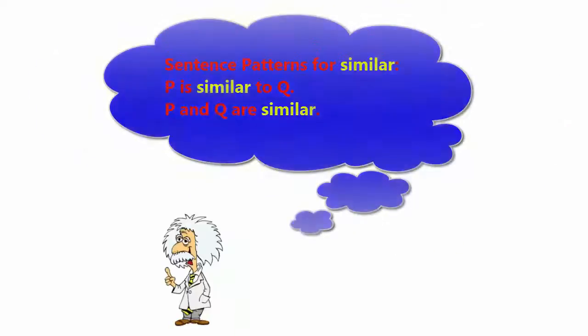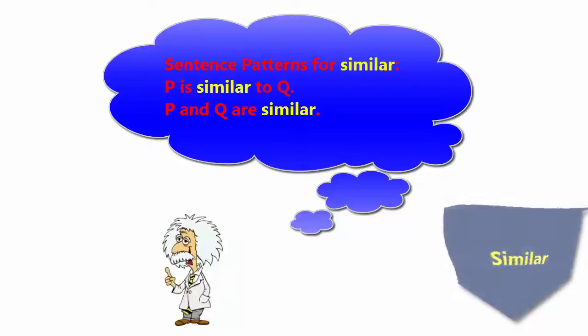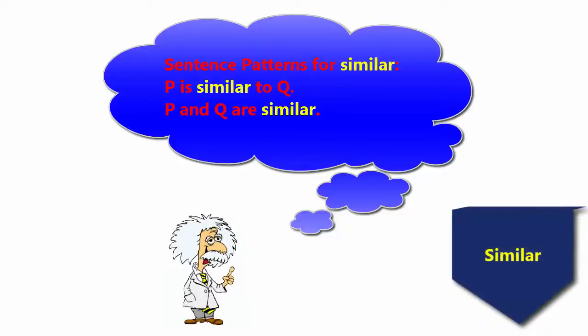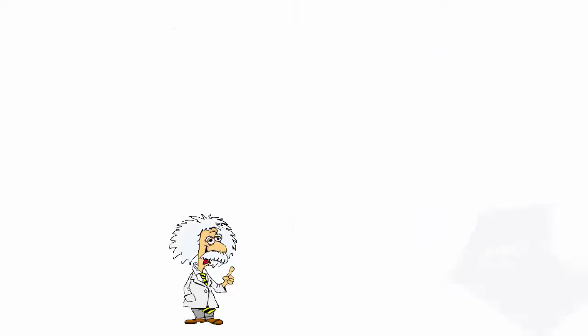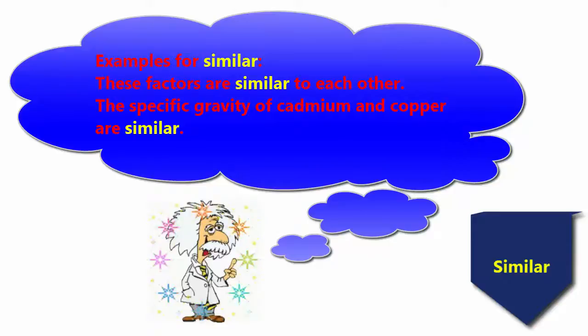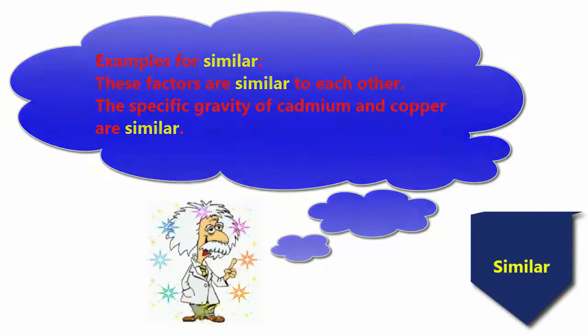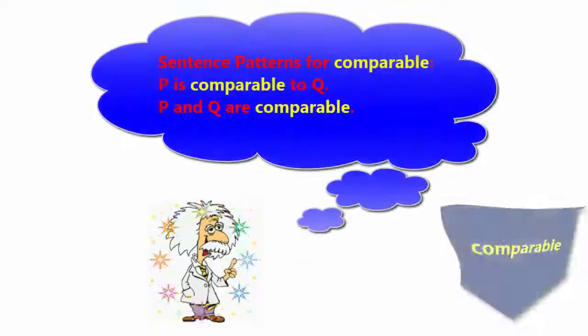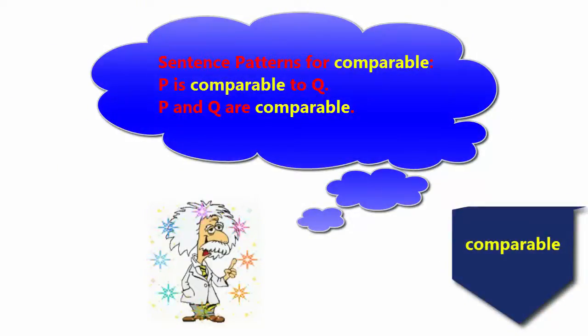Sentence patterns for similar: P is similar to Q. P and Q are similar. Examples for similar: These factors are similar to each other. The specific gravity of cadmium and copper are similar. Sentence patterns for comparable: P is comparable